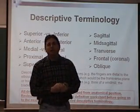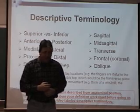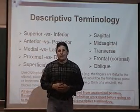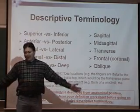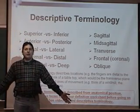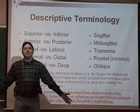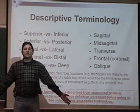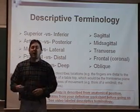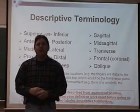Oblique divides diagonally — we will probably not use it very much in this course, just know it as a term. Again, everything is from anatomical position: standing with arms slightly abducted, legs slightly abducted, palms forward or supinated, facing forward with head square on shoulders. Make sure you have this terminology down. Practice this terminology. Your next slide will allow you to practice it.